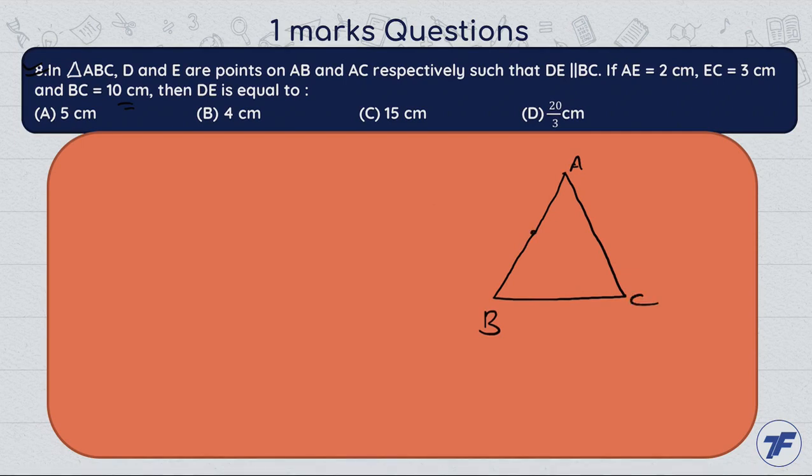Here we have triangle ABC and D and E, two points on AB and AC respectively. Here we find the length of DE.